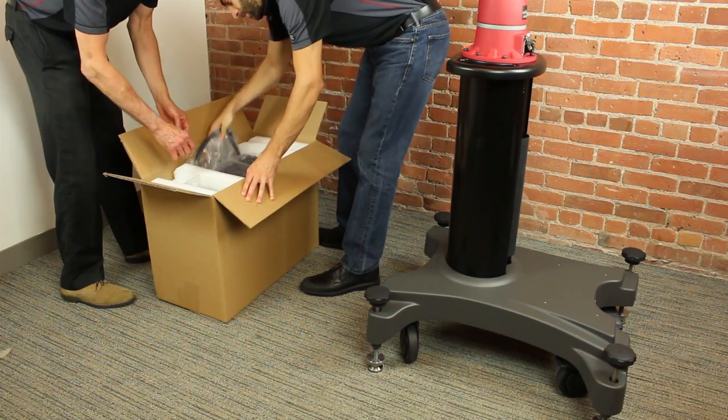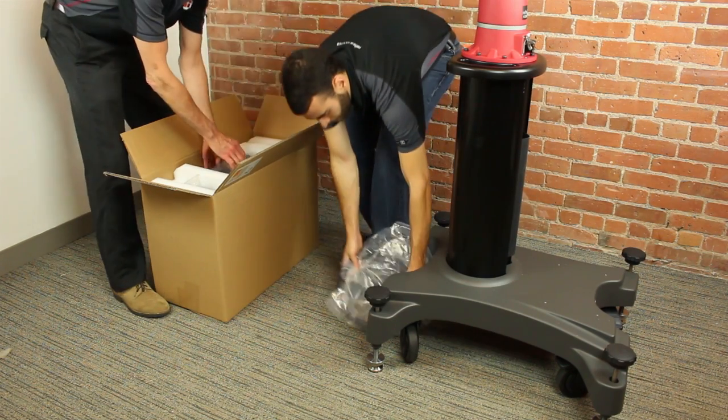All right, the arm's in place. Let's set up the controller. Open box two and remove the controller and connected e-stop.